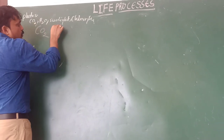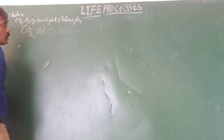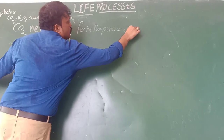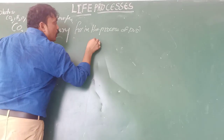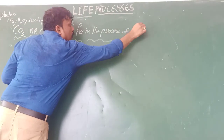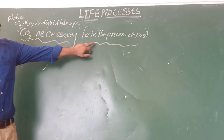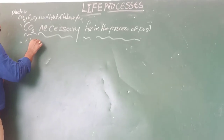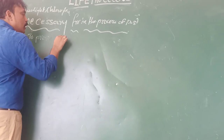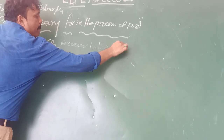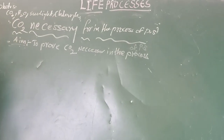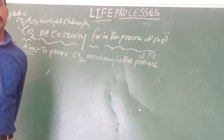Carbon dioxide is necessary in the process of photosynthesis. To prove this, we conduct an experiment. The aim of this experiment is to prove that carbon dioxide is necessary in the process of photosynthesis.